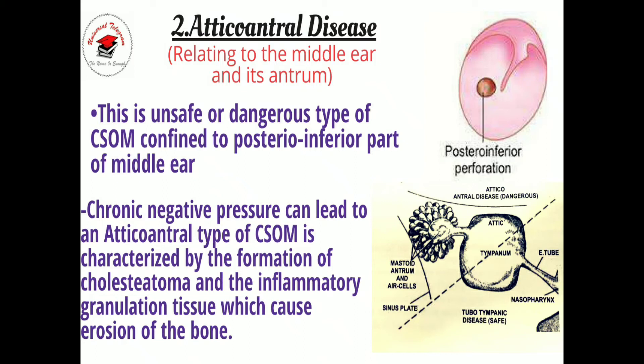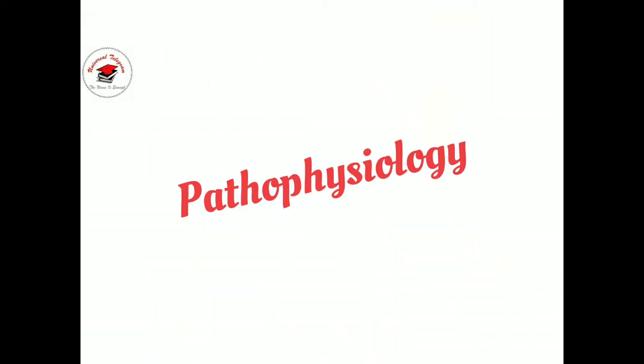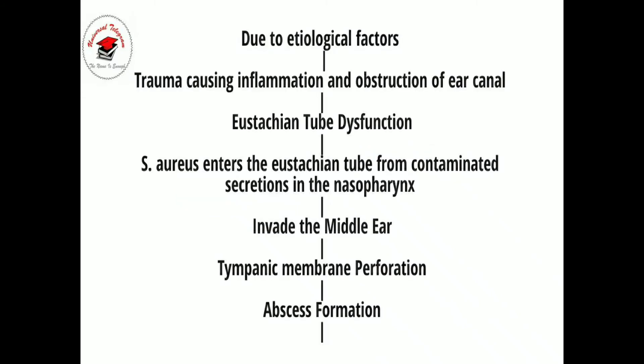Now let's talk about the pathophysiology of Chronic Suppurative Otitis Media, as shown in a flowchart. CSOM is initiated by an episode of acute infection. There are likely a number of reasons for the inflammation, including acute otitis media, perforation of the tympanic membrane, and Eustachian tube dysfunction.